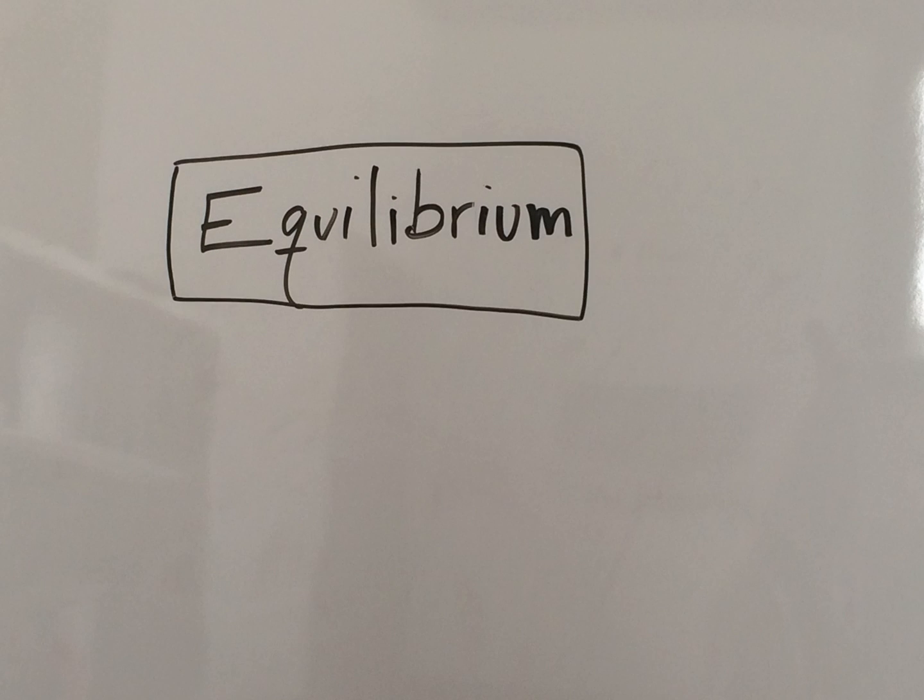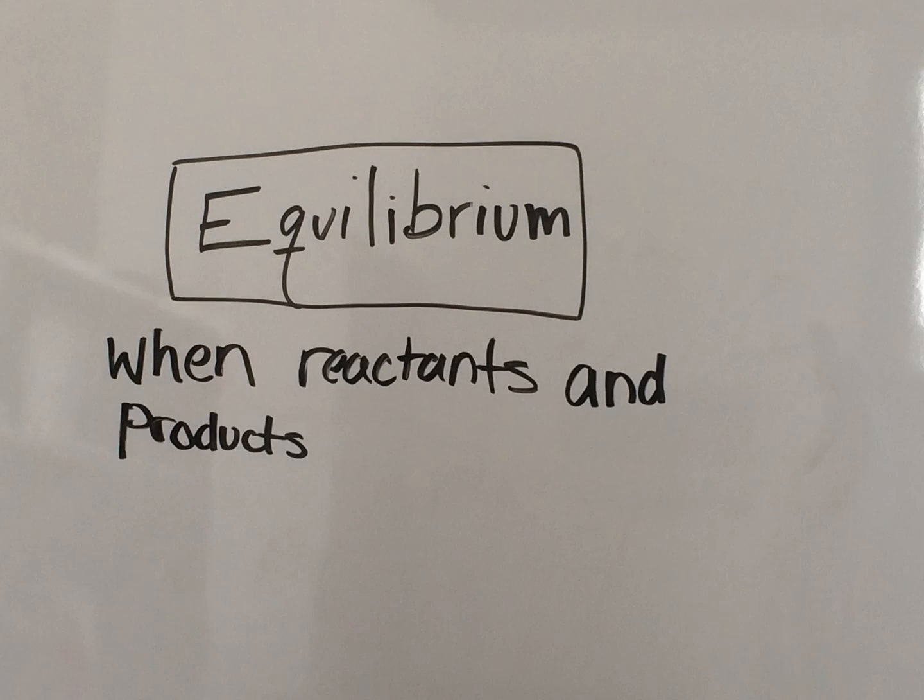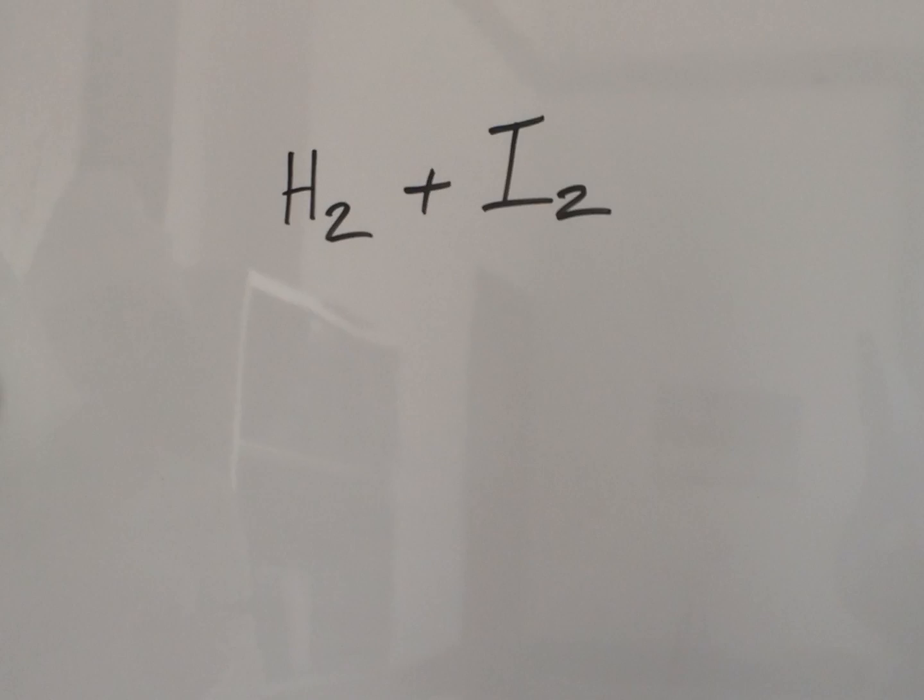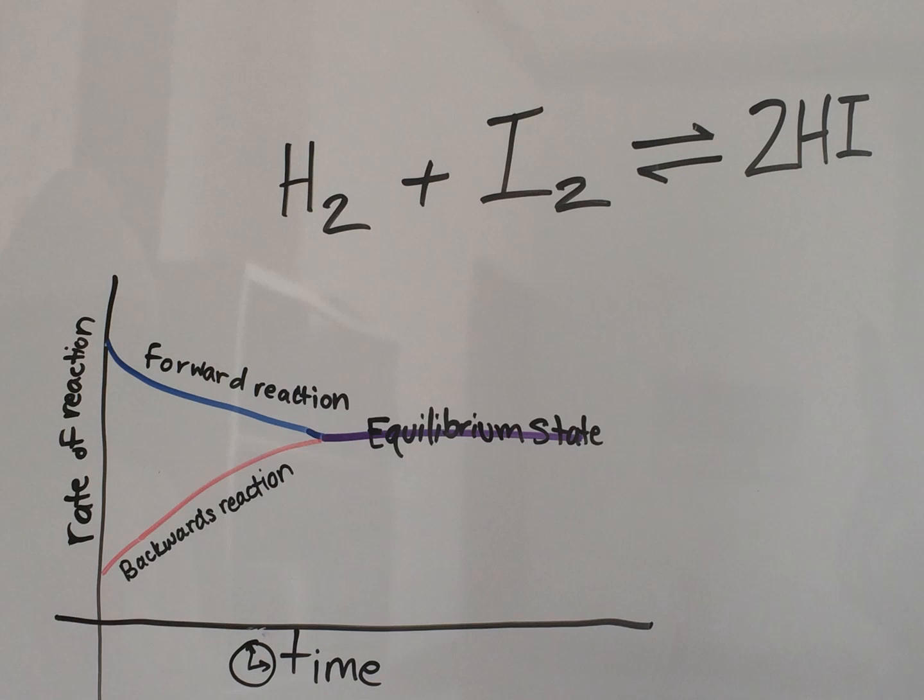When talking about chemical reactions, there's a very big topic that comes up: equilibrium. Equilibrium can best be explained as when the forward reaction happens at the same rate as a reverse reaction, making the products and reactants stop changing. All reactions will eventually reach equilibrium.